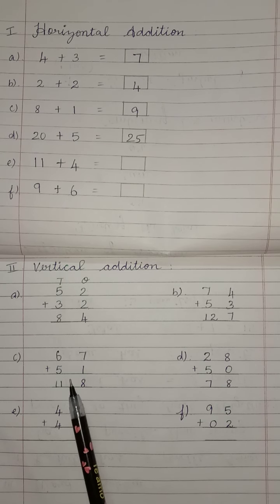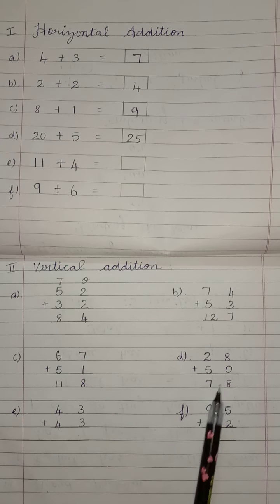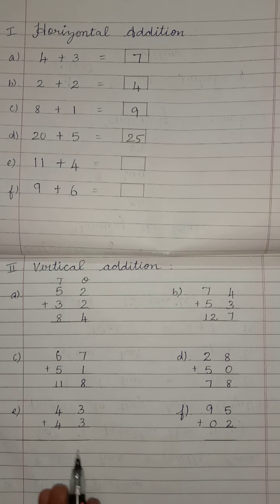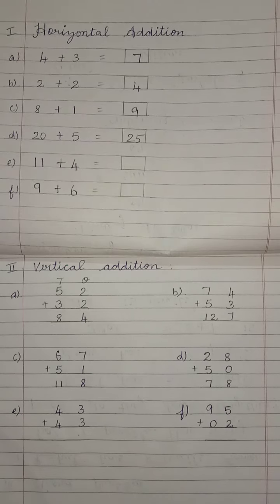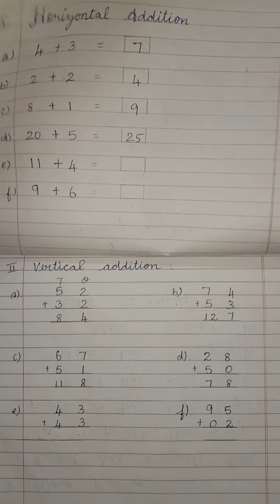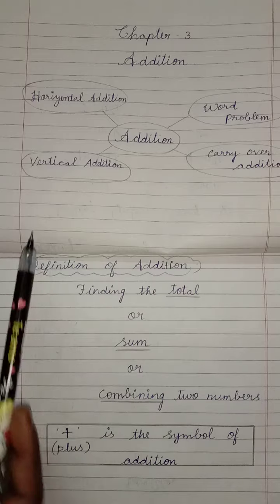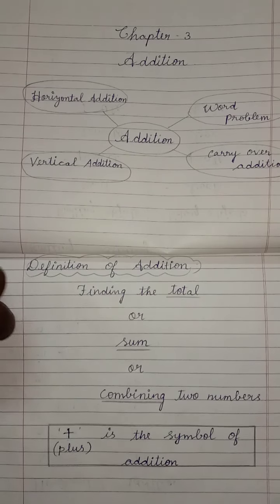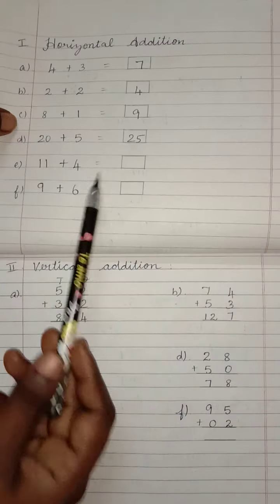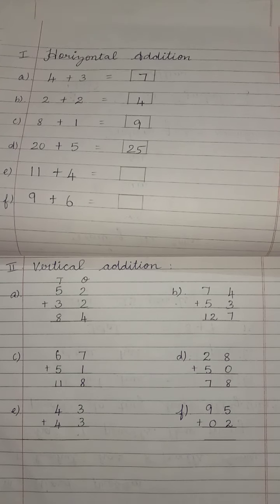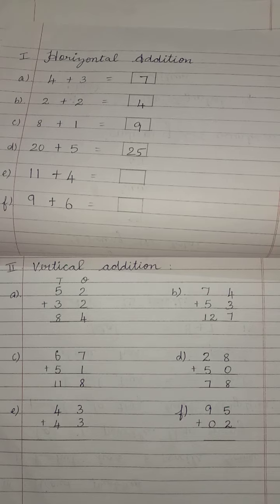So, children, this sum you have to write the same way. You have to write sums E and F also. Today's homework: you have to complete Chapter 3 Addition — the mind map, definition of addition, then horizontal addition and vertical addition. Write your handwriting neatly, children. See you next class. Thank you.